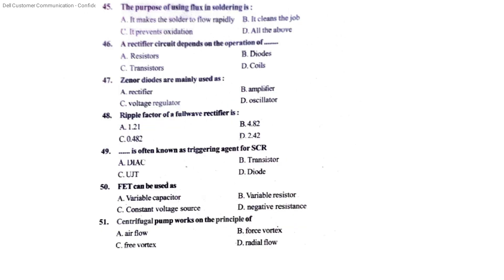The purpose of using flux in soldering: it makes the solder flow rapidly, it cleans the job, and it prevents oxidation — the answer is all of the above. A rectifier circuit depends on the operation of a diode. A Zener diode is mainly used as a voltage regulator. The ripple factor of a full wave rectifier is 0.482.